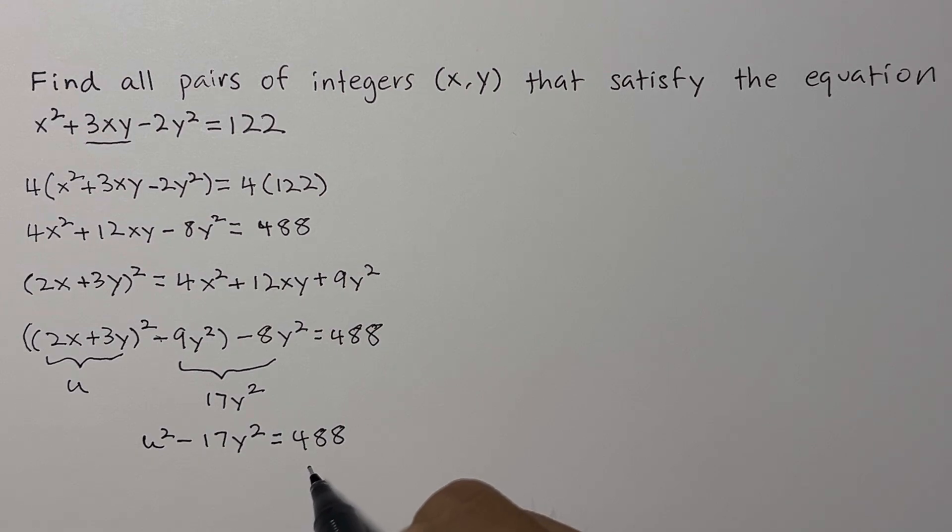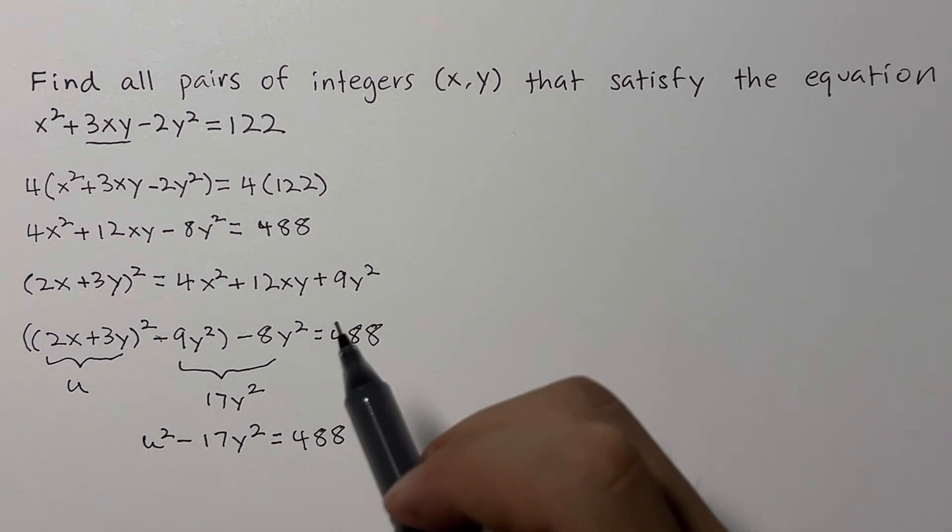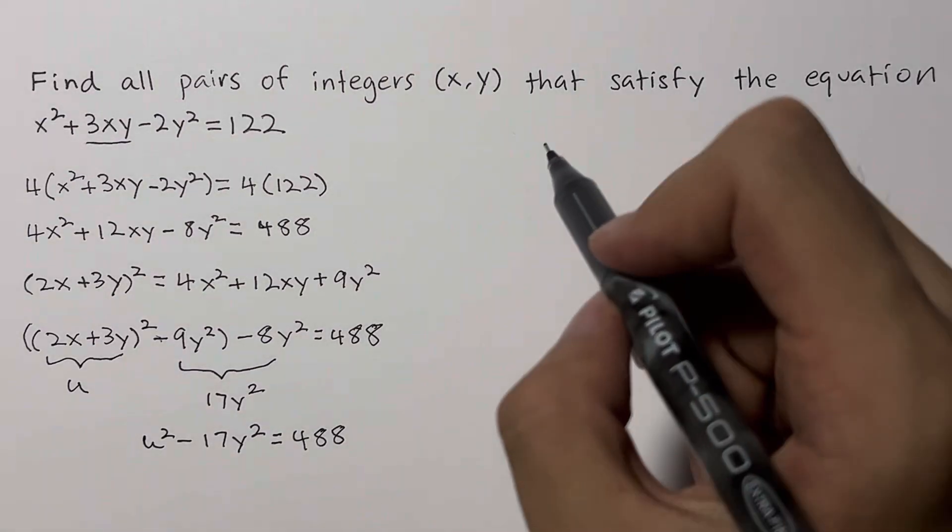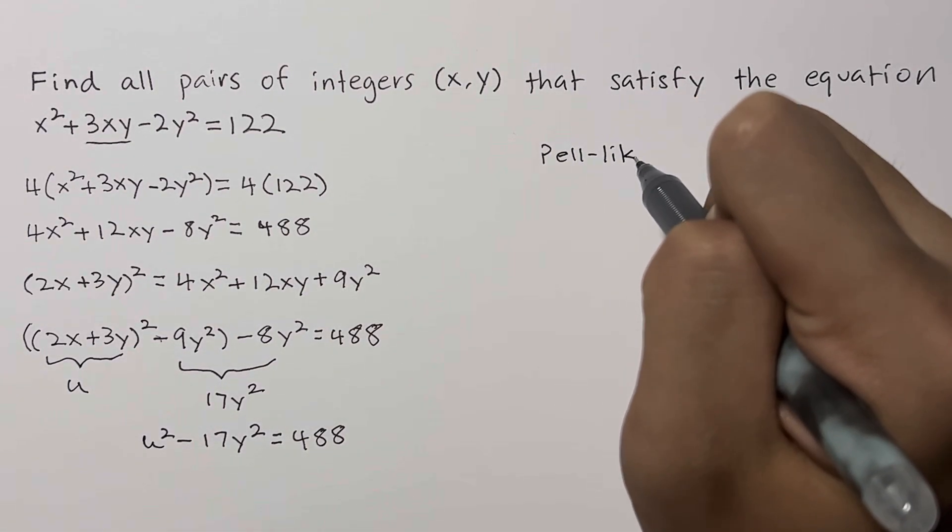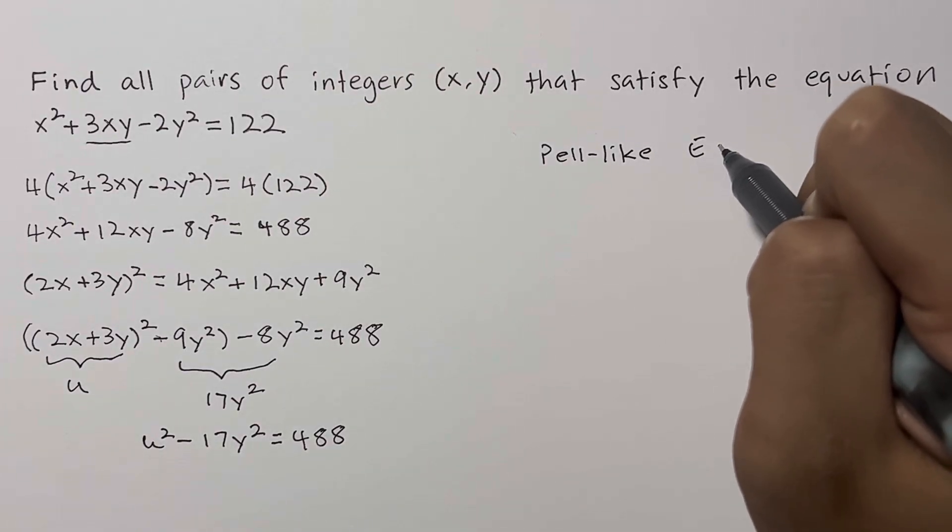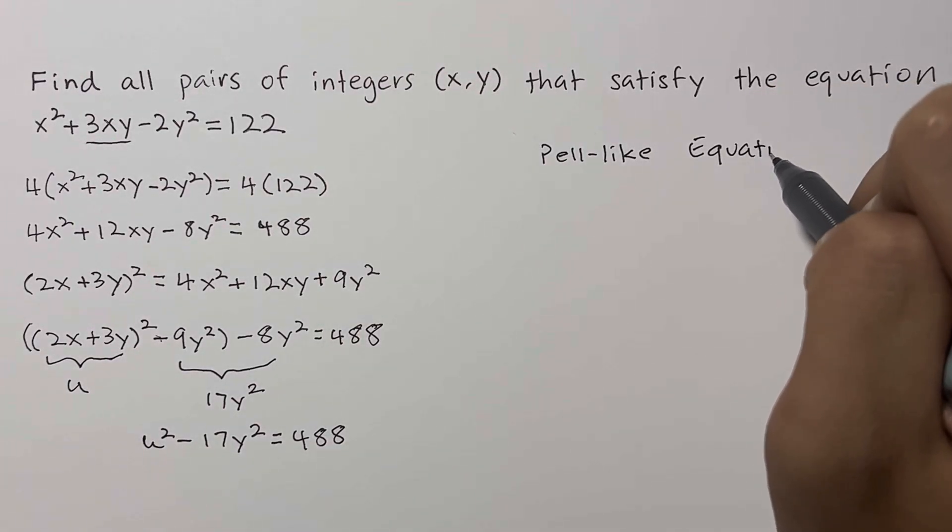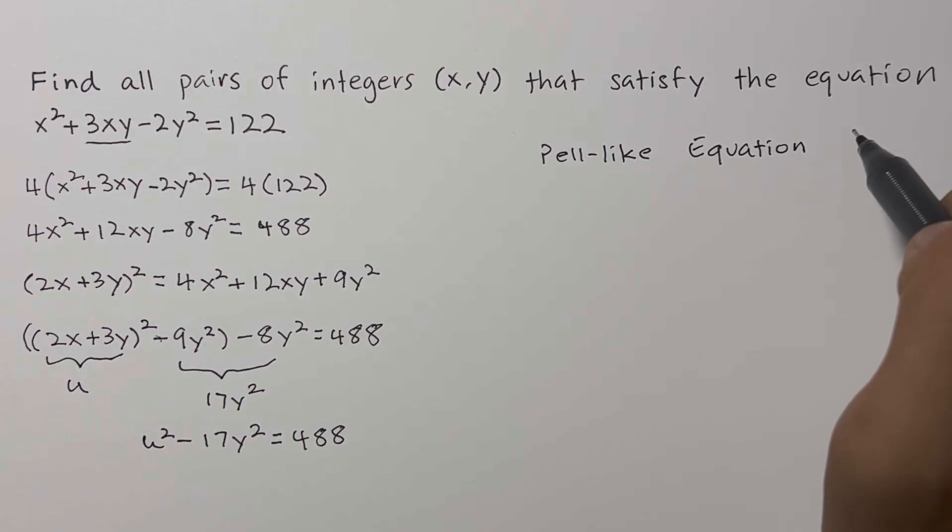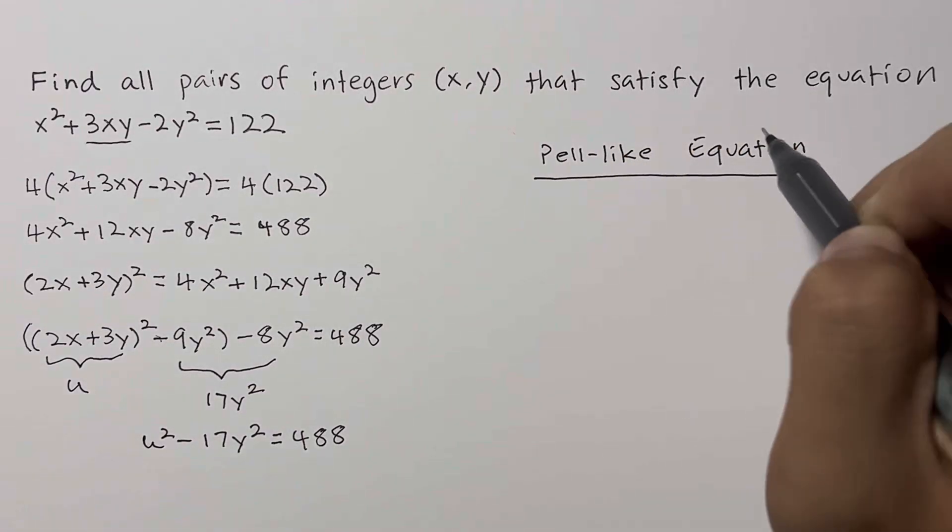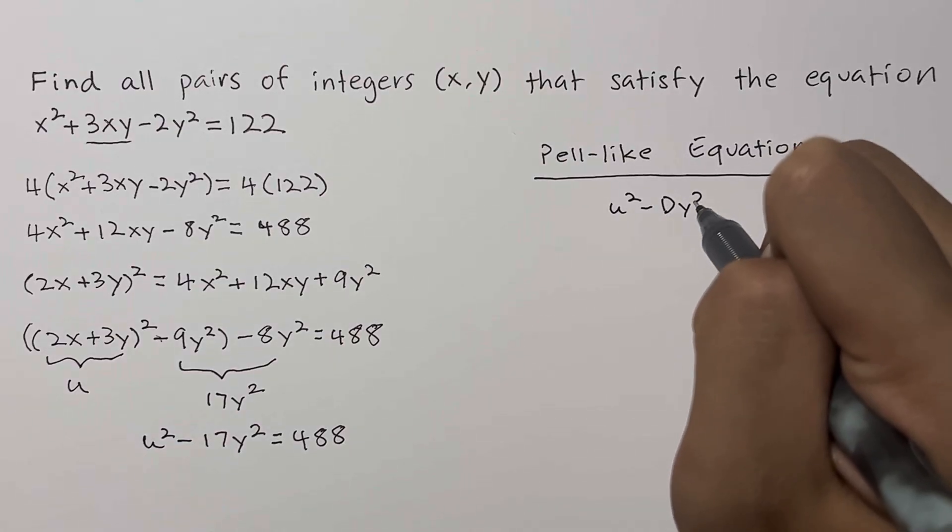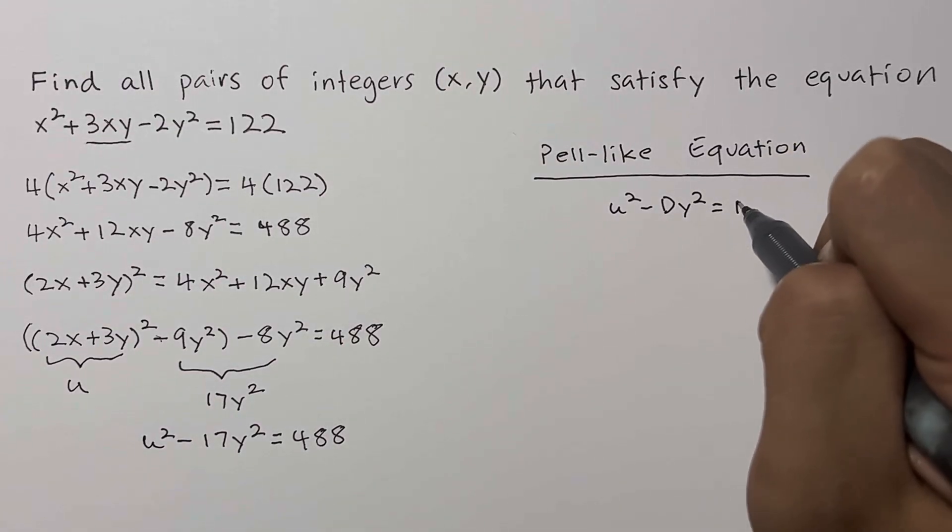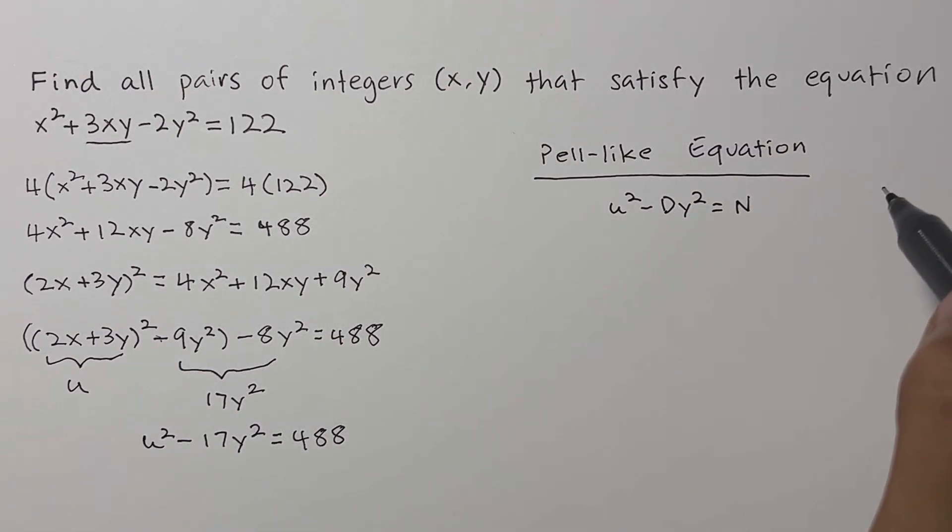Now, this is a Pell-like equation, which has a general form. The Pell-like equation has the form u² - dy² = n. This is a major area of number theory.